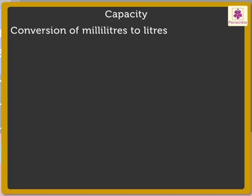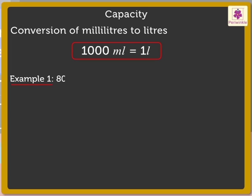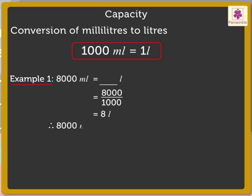Kids, now let's convert milliliters to liters. We know that 1000 milliliters is equal to 1 liter. Let's convert 8,000 milliliters into liters. So here, 8,000 divided by 1000 is equal to 8 liters. We could also get the answer by just removing three zeros from the right-hand side of 8,000. Thus, we get 8,000 milliliters is equal to 8 liters.